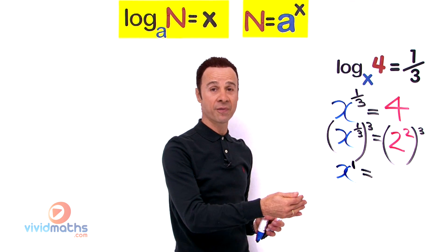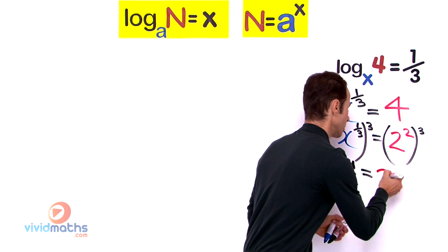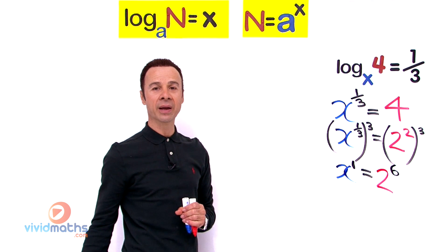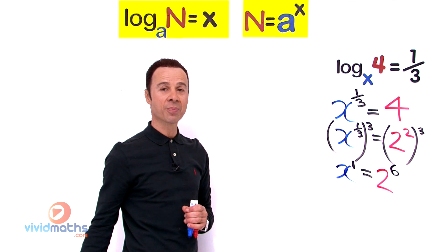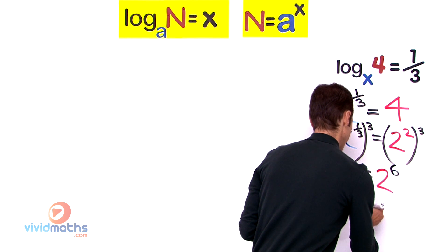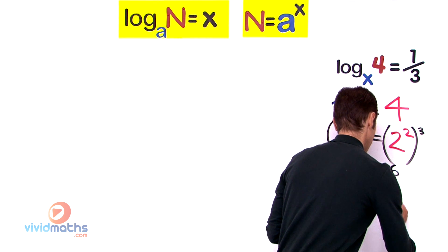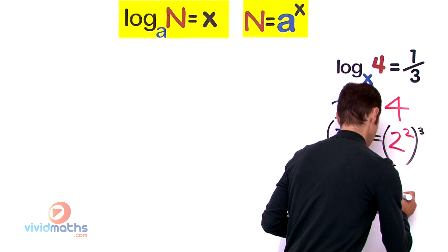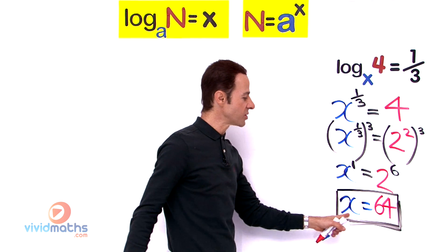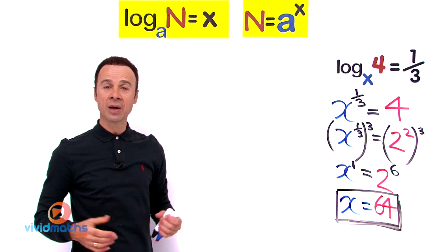On the right side, we have 2 squared raised to the power of 3, so we multiply the powers: 2 times 3 equals 6, giving us 2 to the power of 6. So x to the power of 1 equals 2 to the power of 6. Therefore the missing base x equals 64.